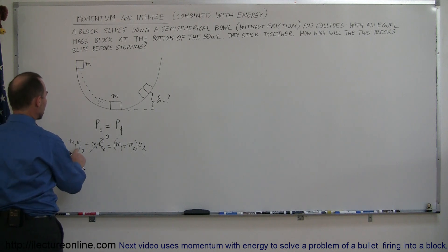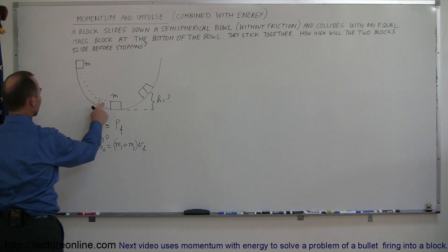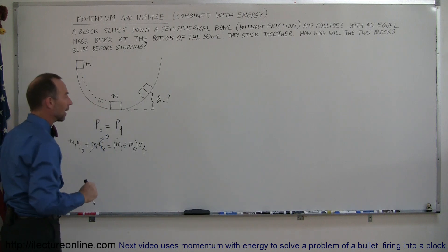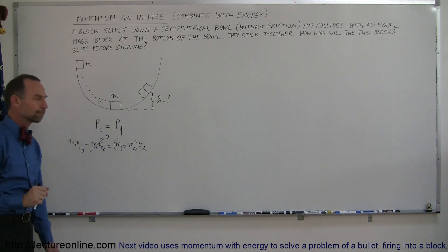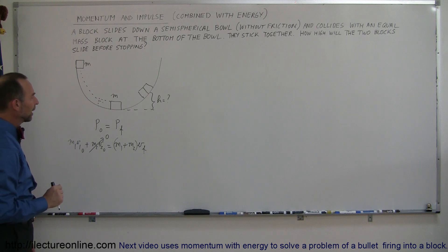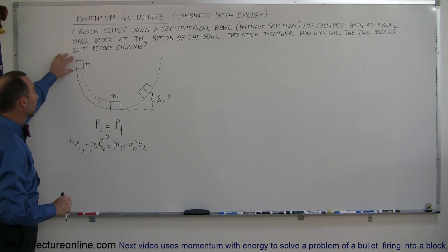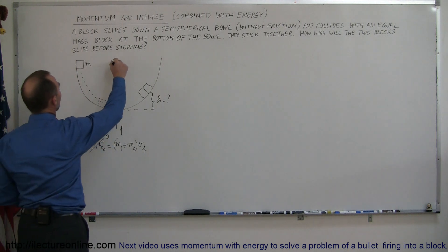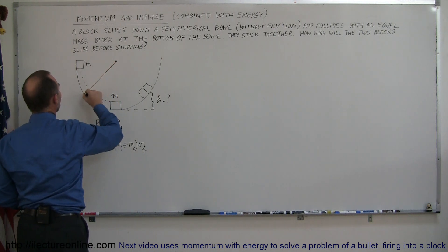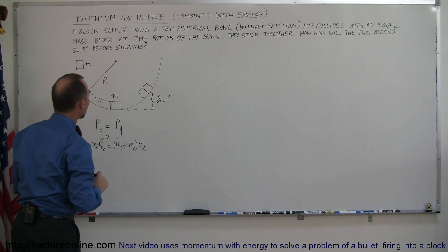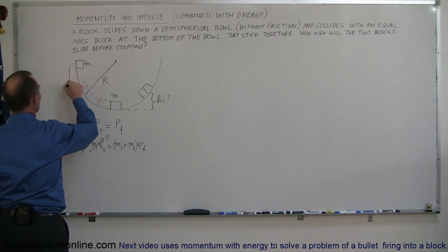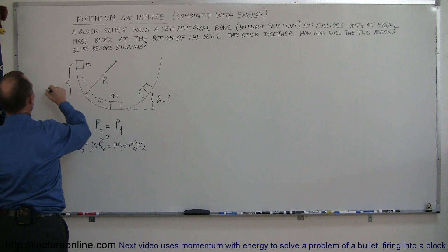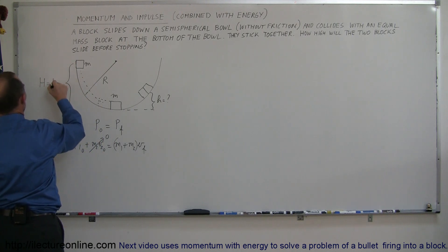What is the initial velocity when the first block collides with the other block? We weren't given that velocity, but we do know that it starts from up here and there's no friction along the side of the bowl. Realizing that the radius of the bowl can be represented by the letter r, the first block starts from height h equal to r.